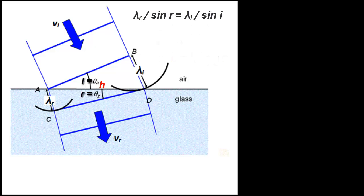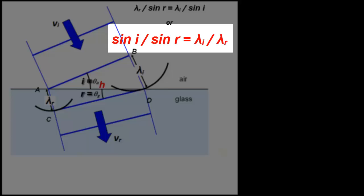The more common version of this equation is to rewrite it one more time, getting all the sines on one side and all the wavelengths on the other, as shown.